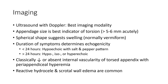Imaging: ultrasound with Doppler is the imaging modality of choice. Appendix size is the best indicator of torsion, more than 5 to 6 mm. Spherical shape indicates swelling, as it is normally vermiform. Duration of symptoms determines echogenicity: less than 24 hours shows hypoechoic with swirled or striated pattern; more than 24 hours shows iso- or hyperechoic. Classically, decreased or absent internal vascularity is seen, with peripheral vascularity or hyperemia around the torsion. Reactive hydrocele or scrotal wall edema may also be present.